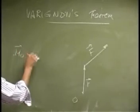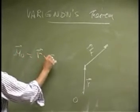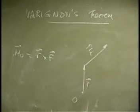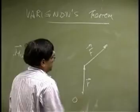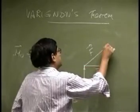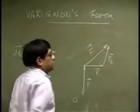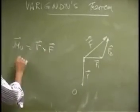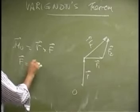We just defined that moment. Now if this force happened to have two components - there is a component here F1 and there is another component here as F2 - then the force F is the sum of the component F1 and F2.